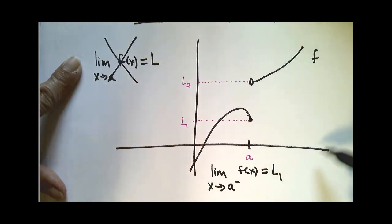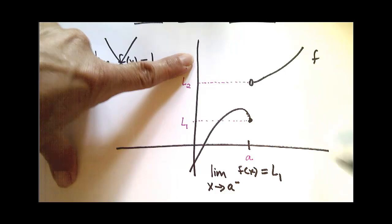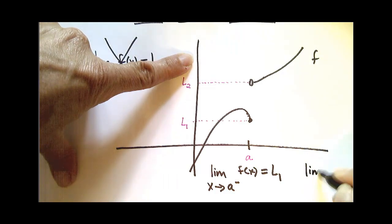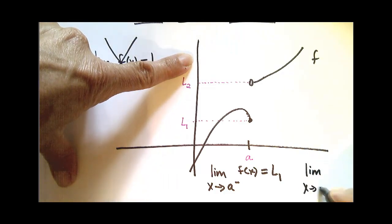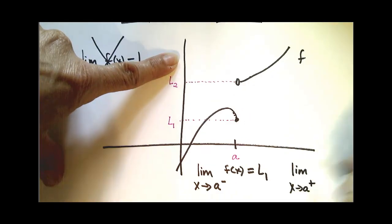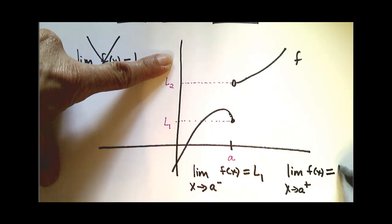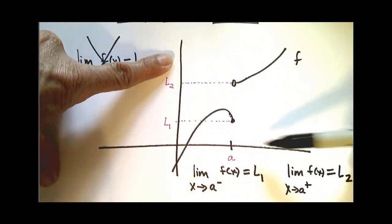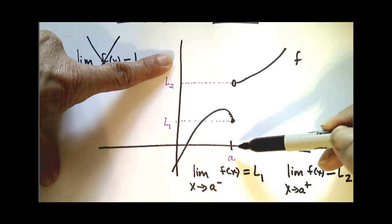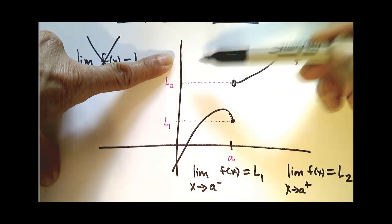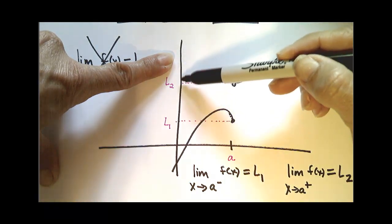Now we have notation to talk about this right-sided limit. It's the limit as x approaches a plus of f(x). In this case, it equals L2, because as I get closer and closer to my x value from the right, my y value gets closer and closer to L2.